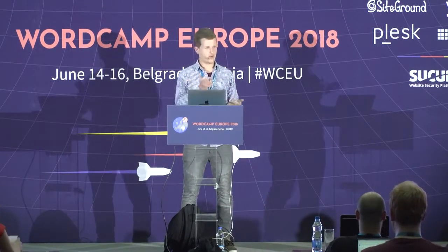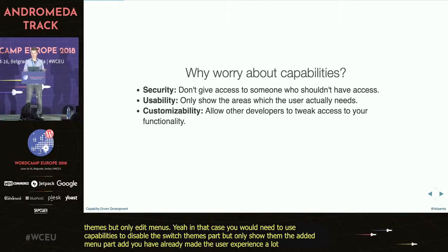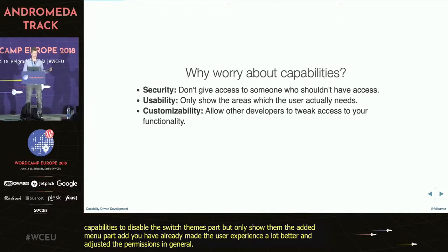A good example of that would be WordPress's appearance menu. WordPress always shows you a way to switch themes, but also a way to edit widgets and edit menus. Think about a use case where you want a user to not be able to switch themes, but only to edit menus. In that case, you would need to use capabilities to disable the switch themes part but only show them the edit menus part. You've made the user experience a little better and also adjusted the permissions, because you don't want the user to switch themes for a reason.